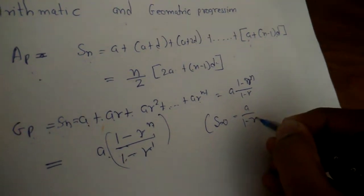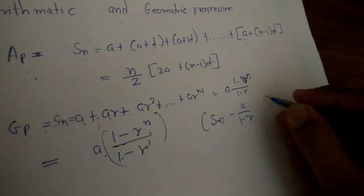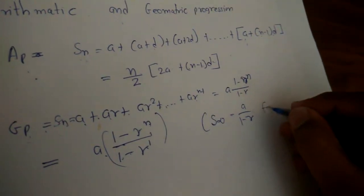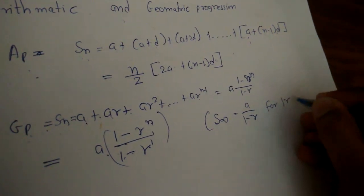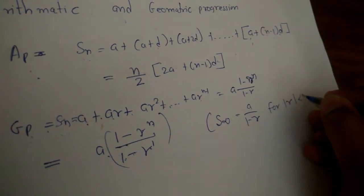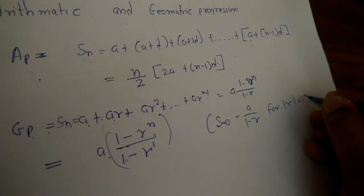When the condition is infinity, the sum equals a upon 1 minus r, but only when r is less than 1 in absolute value.